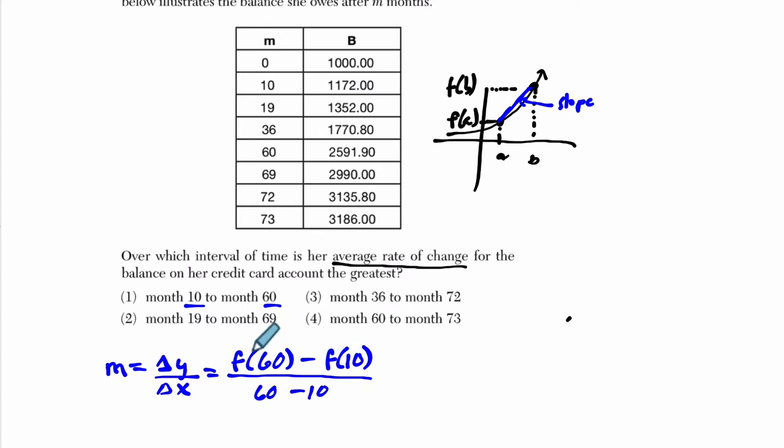And I could have done it the other way. I could have said F of 10 minus F of 60. But I would have had to also reverse the denominator to get 10 minus 60. And that would get me the same thing. So F of 60, if you look at our table, that's this number right here. It's the output. It's the Y value. In this case, the balance. It's 2591.90 minus F of 10, 1172, over 60 minus 10, which is 50. This will be the average rate of change for choice one.